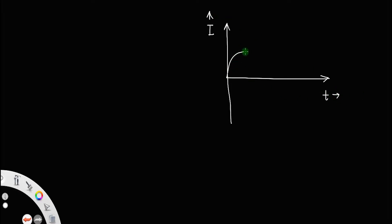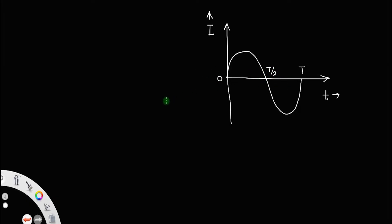Then the AC wave will be like this. This is the positive half cycle and this is the negative half cycle. Let this point represent the time period T, which means the time for one complete cycle of AC. Clearly, this point will be T/2, which means half of the time period, and this one will be the time equal to 0, or we can say as origin.